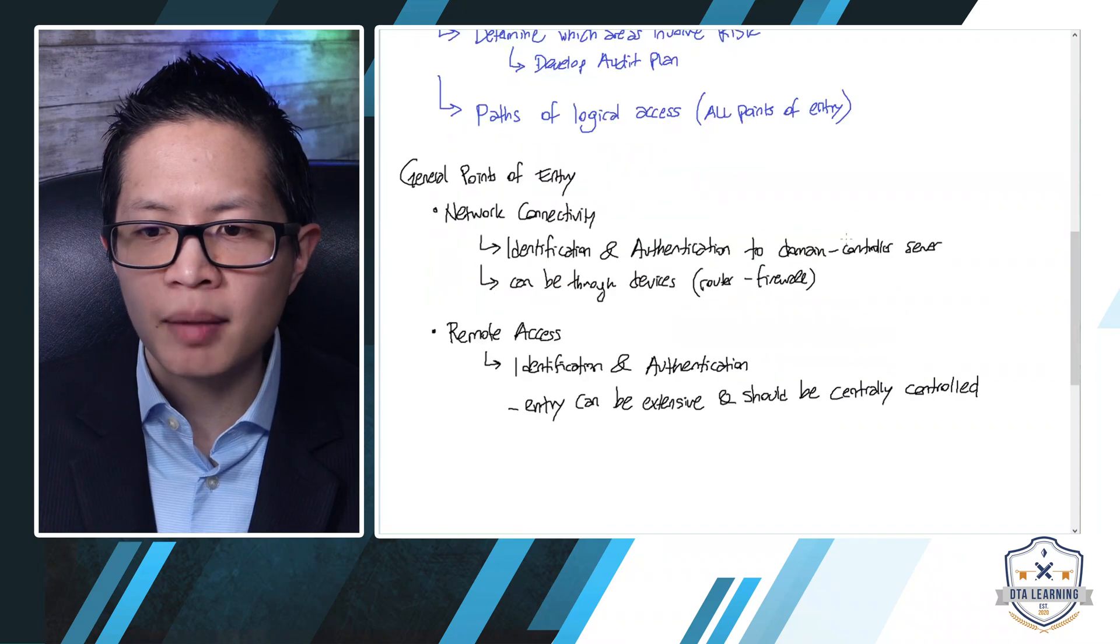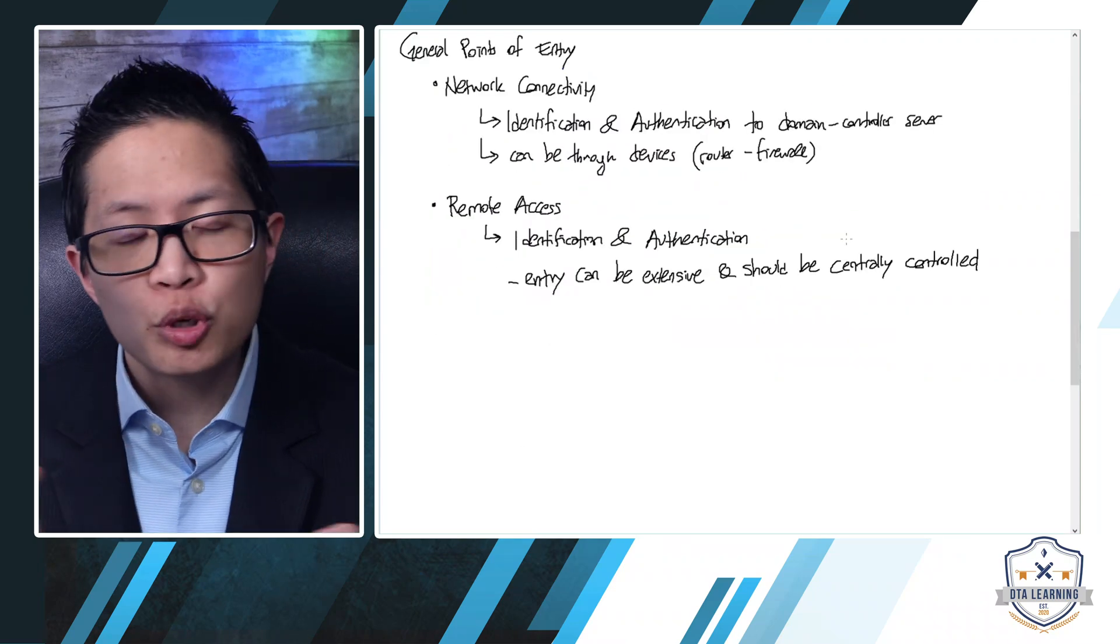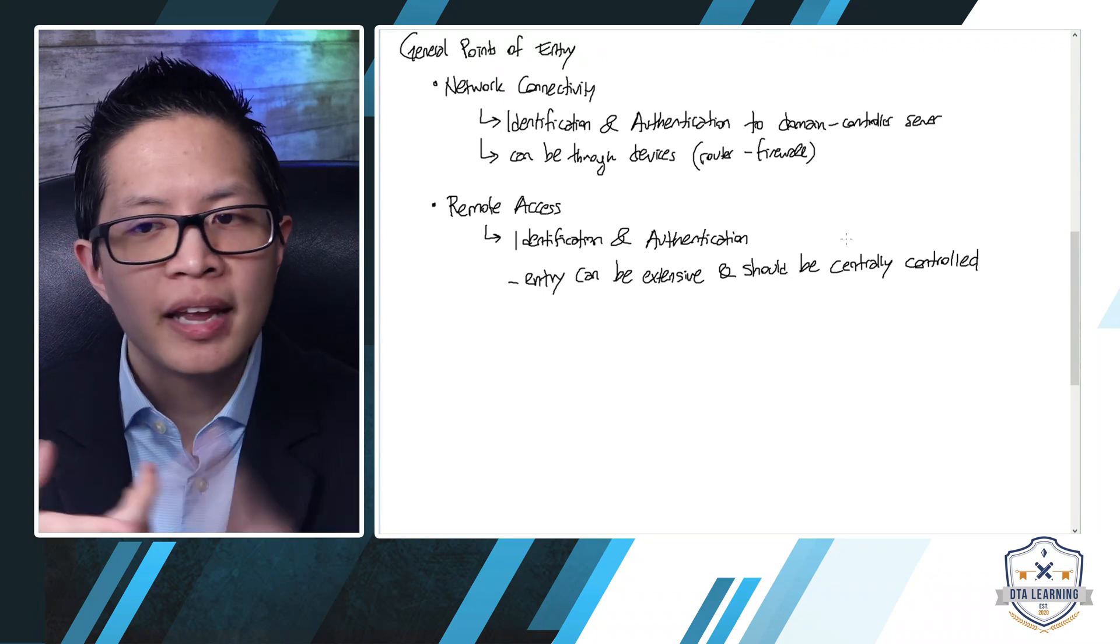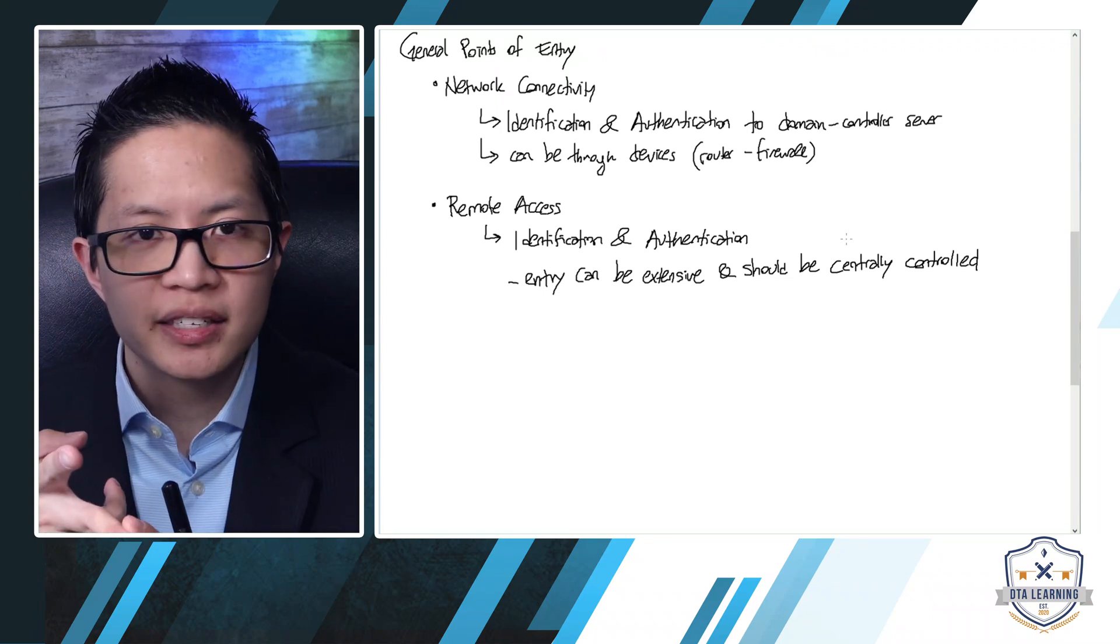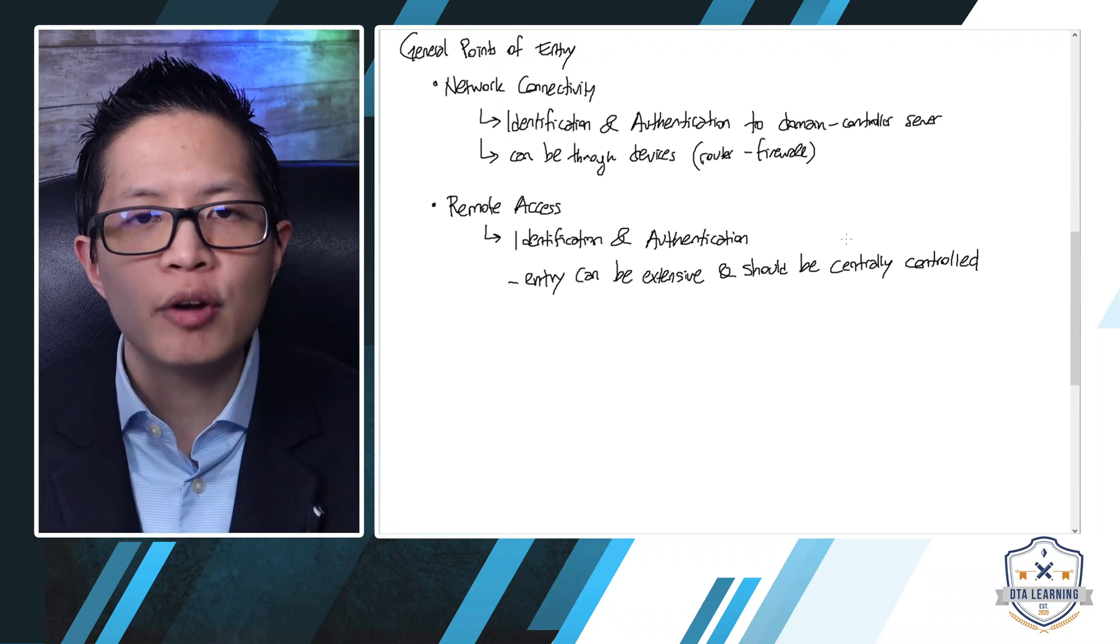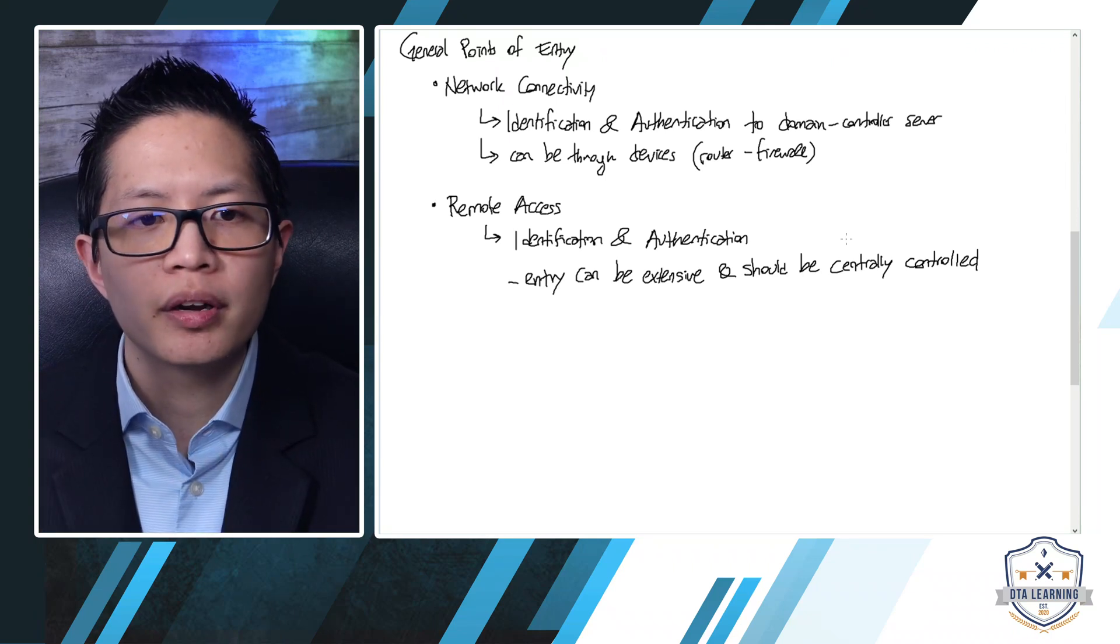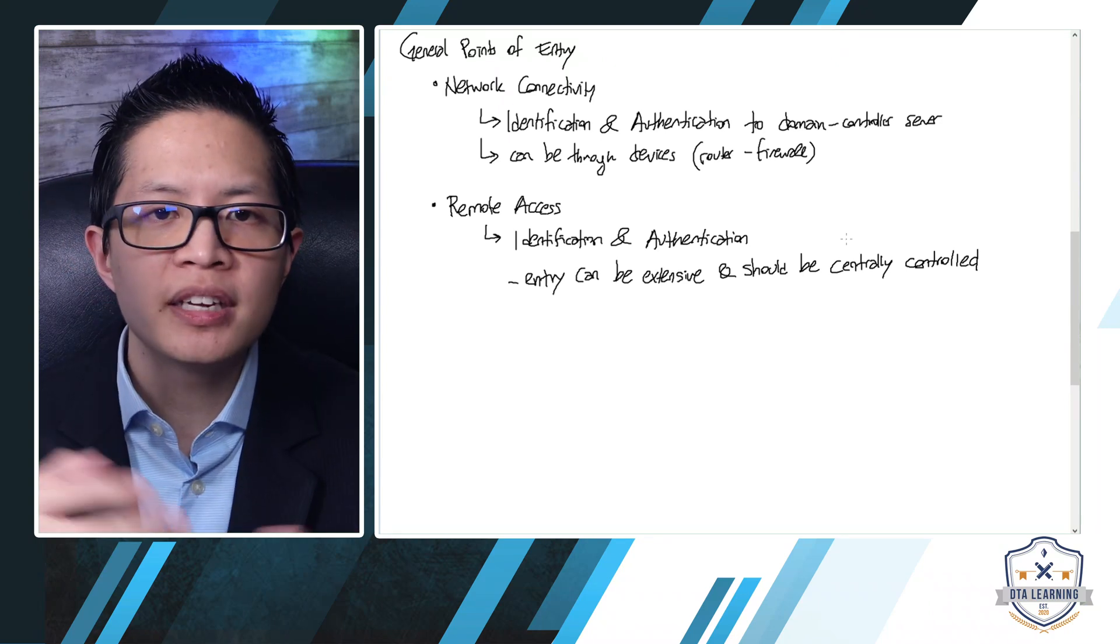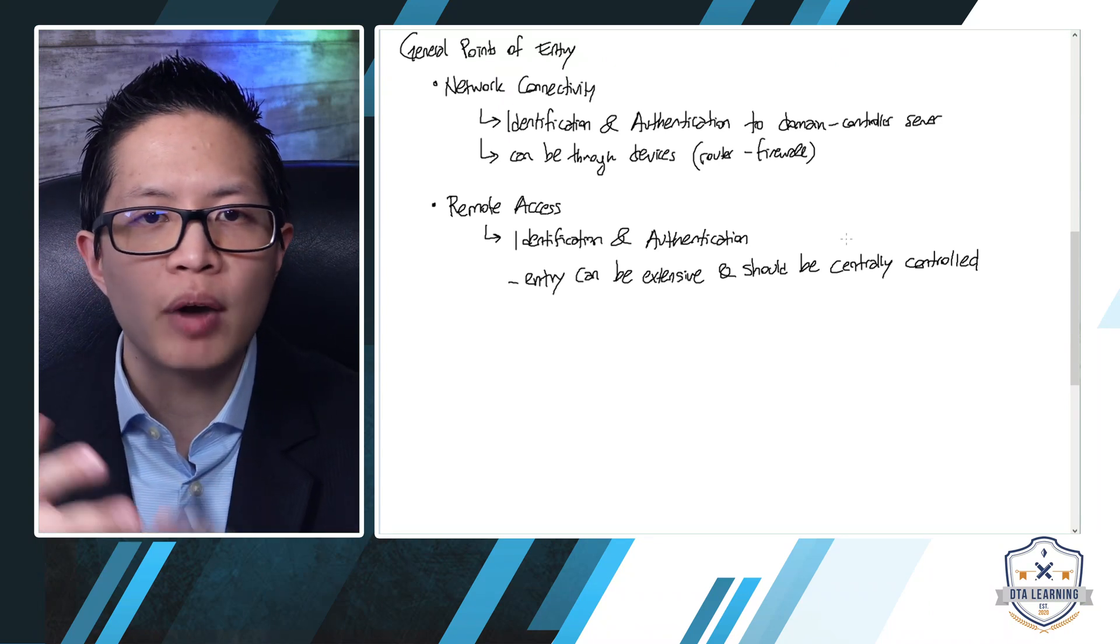So, what are some of the general points of entry? There are usually two points of entry, generally speaking, on a very high level. Network connectivity and remote access. Network connectivity means how users authenticate to the network. Usually, it's through a domain controller server, or sometimes it could be on different devices like the router and firewall.